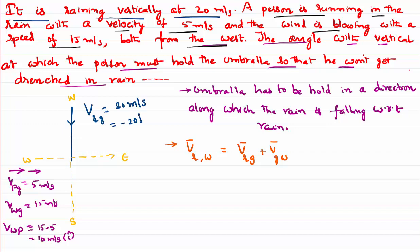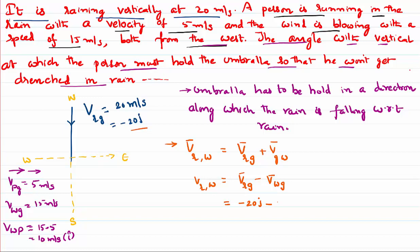I write: velocity of rain with respect to wind equals velocity of rain with respect to ground, minus velocity of wind with respect to ground. Using ground as the intermediate reference, the velocity of rain with respect to ground is minus 20j. The velocity of wind with respect to ground, taking the person's motion into consideration, becomes 10i. So velocity of rain with respect to wind is minus 20j minus 10i. On the graph, this lies in the direction of minus i-cap and minus j-cap.